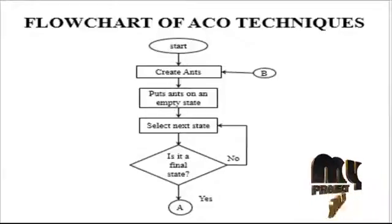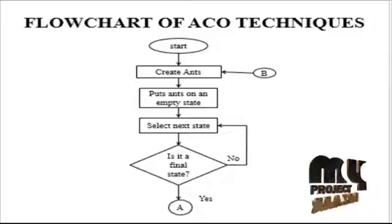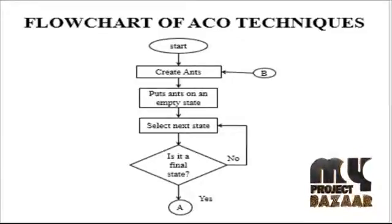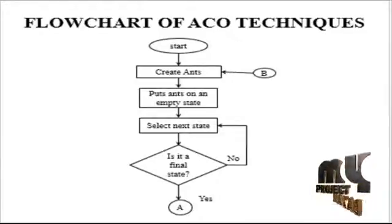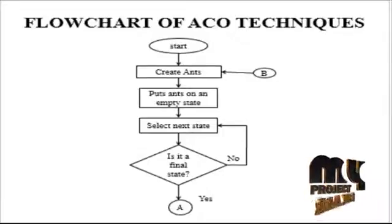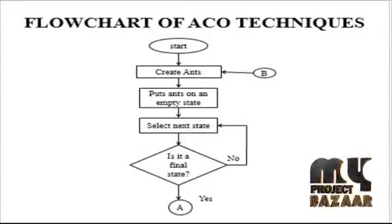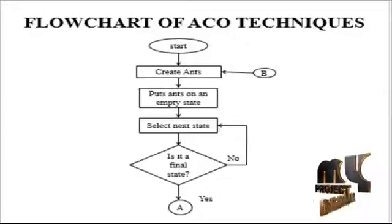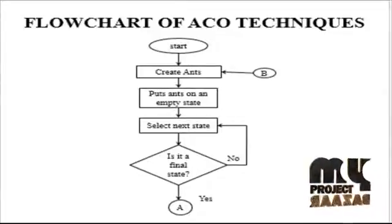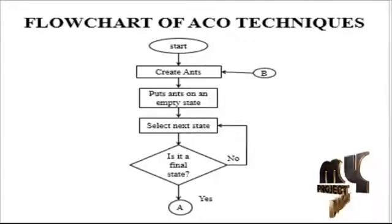How successful has been the past of a particular move is calculated by some method indicating how feasible the move is. The trail level indicates the desirability of that move. Trails are updated when the ants have completed their solutions.